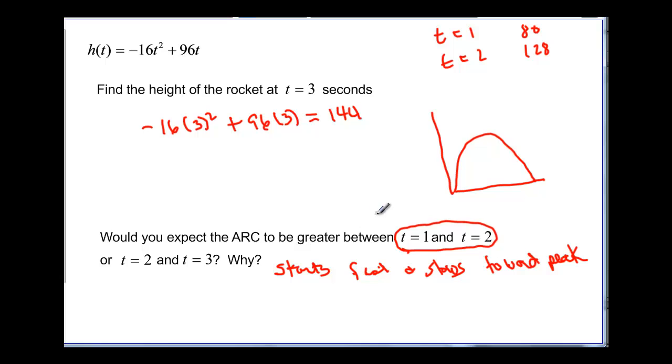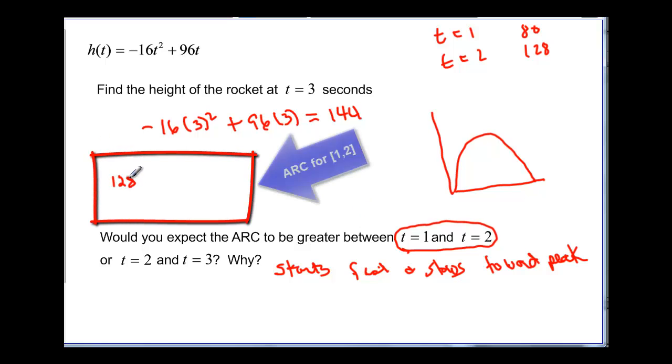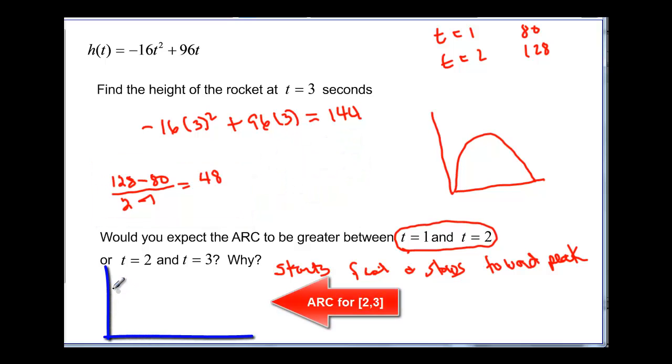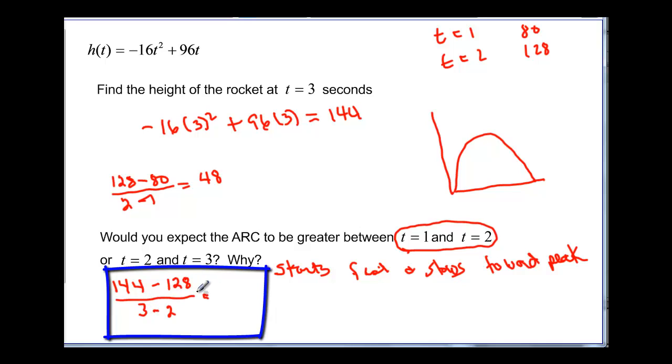And then it says calculate the average rate of change and discuss your answer. Let's go back and do that over here. So t equals 1 and t equals 2, the y values were 128 minus 80 over 2 minus 1. 128 minus 80 over 2 minus 1 is going to give me 48. And then I'll do the other one down here. And that is going to be 128 and 144. So 144 minus the 128 over 3 minus 2. And that gives me 16. And I was correct. The 1 to 2 was 48, and the 2 to 3 was only 16.